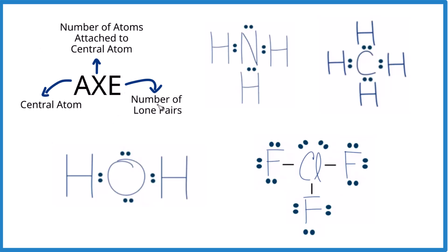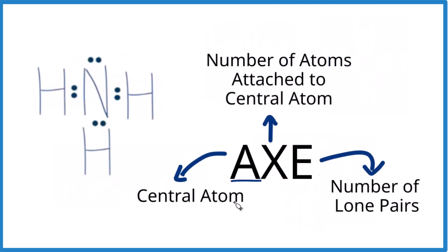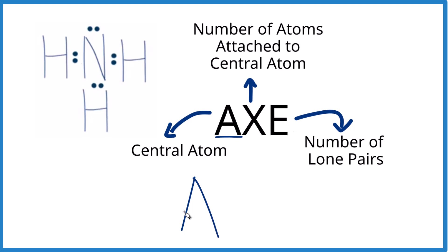For the AXE notation, let's start with ammonia. We have the Lewis structure for NH3, and we want to figure out its molecular geometry using AXE. A is the central atom, that's the nitrogen. X is the number of atoms bonded to the central nitrogen. We have one, two, three, and this is the chemical bond, a pair of electrons between atoms. So we have X3.